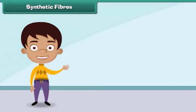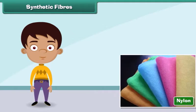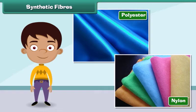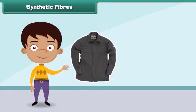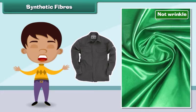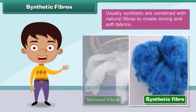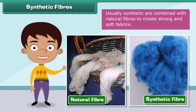Synthetic fibers are man-made. Nylon and polyester are examples of synthetic fibers. Fabric made from synthetic fibers is cheap, dries easily, and does not wrinkle. Usually, synthetic fibers are combined with natural fibers to create strong and soft fabrics.